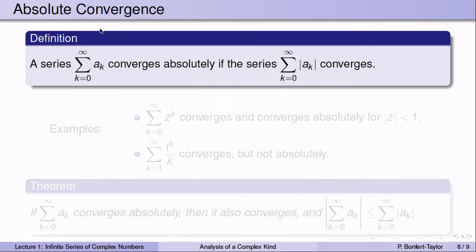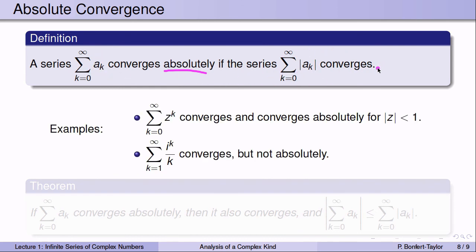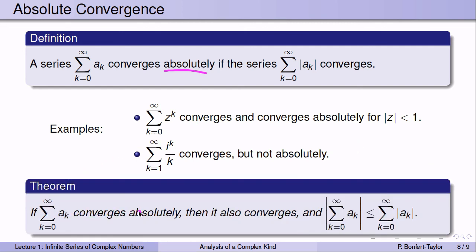We call this absolute convergence. We say a series of complex numbers converges absolutely if putting absolute values around the a_k's gives a convergent series. The series of z to the k converges absolutely for |z| < 1, while the series of i to the k over k converges but not absolutely. Here's the theorem: if a series converges absolutely, then it also converges. The reverse is not true, as we just saw. So absolute convergence implies convergence, but not vice versa.